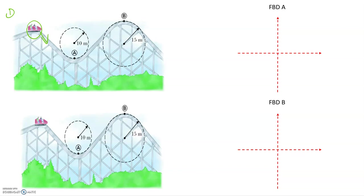The first step is to find your circle, which we already have here, and define the radial or centripetal direction. Drawing from point A, we draw inwards towards the center of the circle, and we'll call that the positive R direction. You can draw it the other way, but it will make your life easier to define R as pointing towards the center of the circular motion.